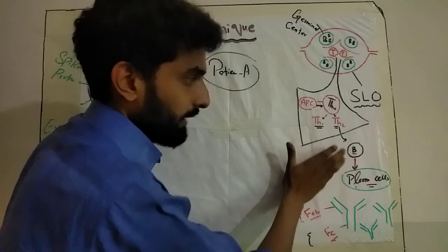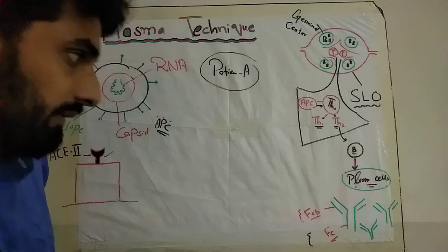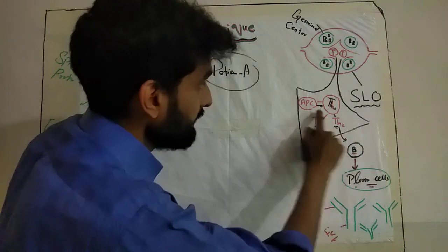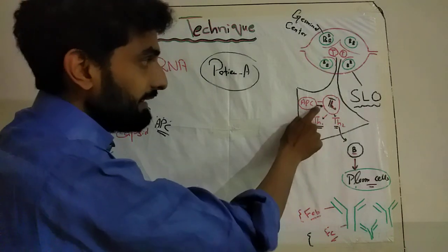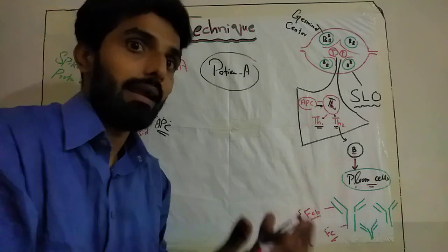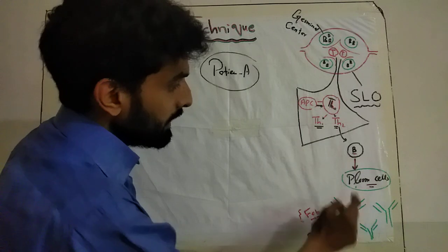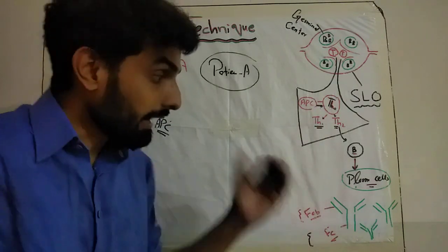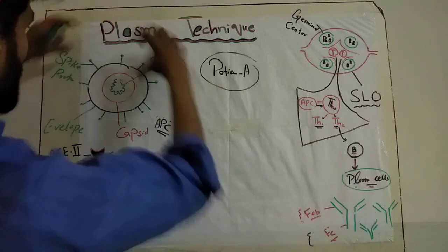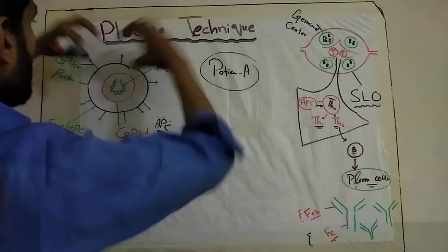The B lymphocyte is converted into a plasma cell. The plasma cell is responsible for the production of antibodies. These antibodies produced by the plasma cells are very specific against the antigen — the spike protein of the coronavirus — that was presented to the T lymphocyte. So the antibodies are made against the spike protein antigen, and they will go and bind specifically to that spike protein.